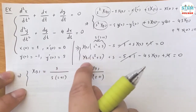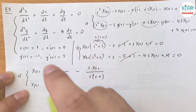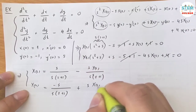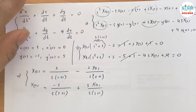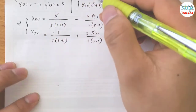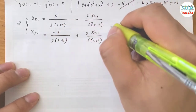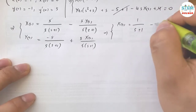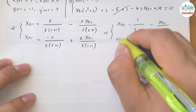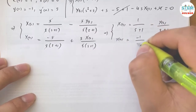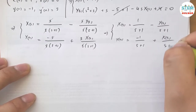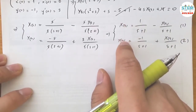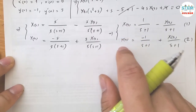For the bottom one, factor and solve for Y of s: negative s over s times s plus 1, plus s times capital X of s over s times s plus 1. Things cancel out, and we're left with something much simpler. Now I'll call this equation 1 and this equation 2. You can plug 1 into 2 or 2 into 1 — it doesn't matter as long as you have one variable. I'm going to plug 1 into 2.